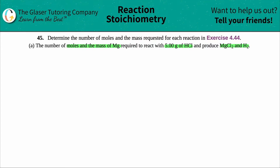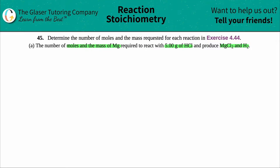It seems like they literally gave us only one number. We're starting off with an amount of one compound — in this case we have 5 grams of HCl — and the question is asking us to find the moles and the mass of some other element or compound. In this case it's an element, it's just magnesium. When we see this setup of starting with one compound and going to another, we have to use stoichiometry.